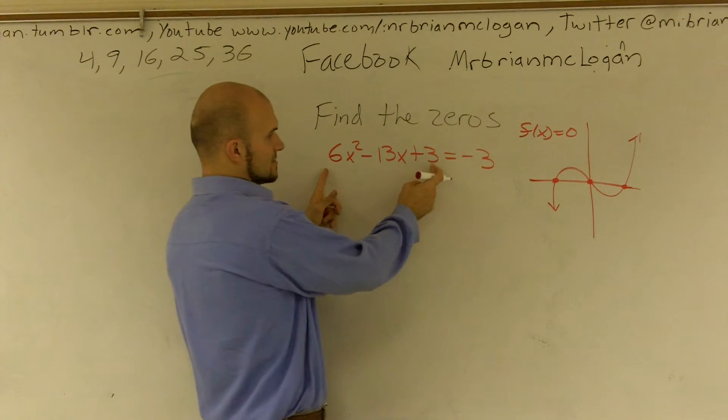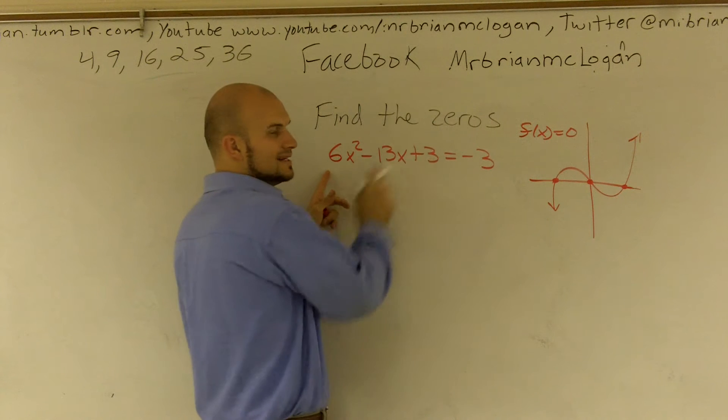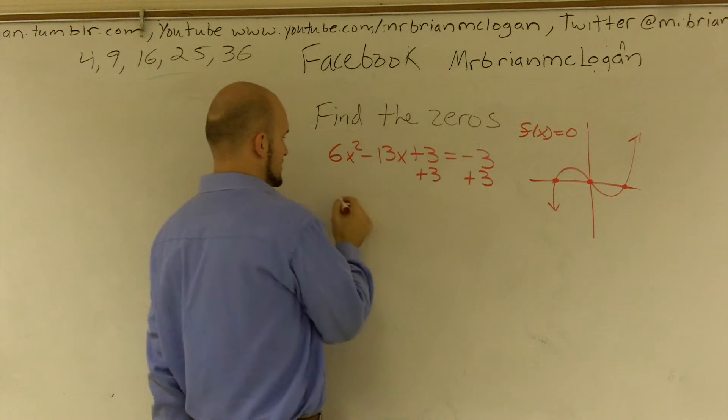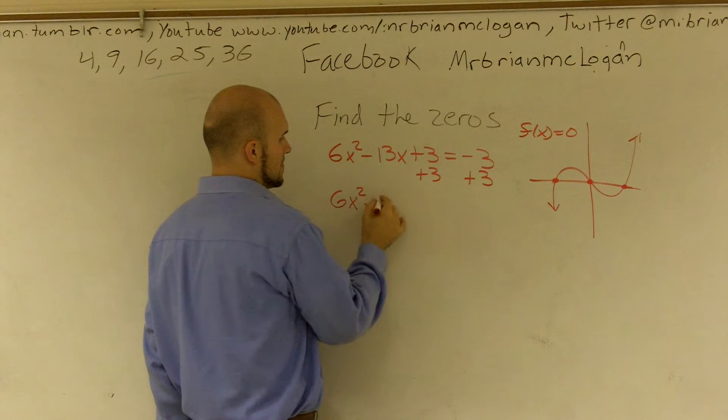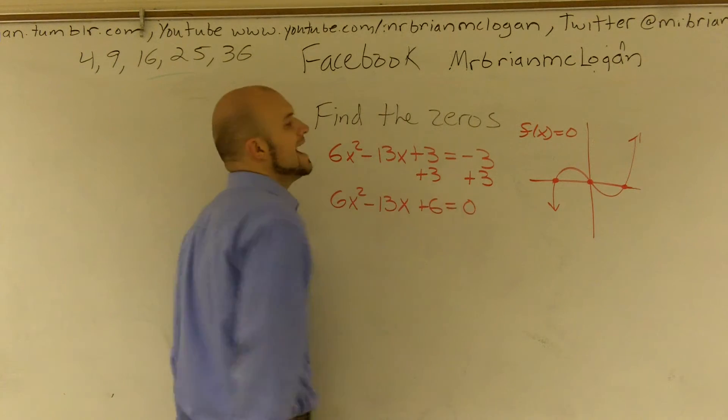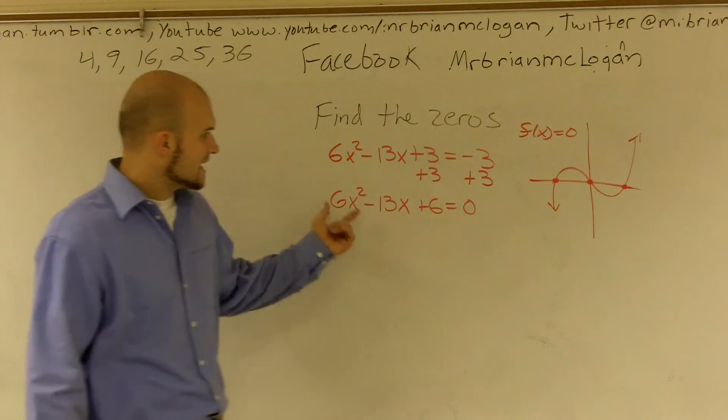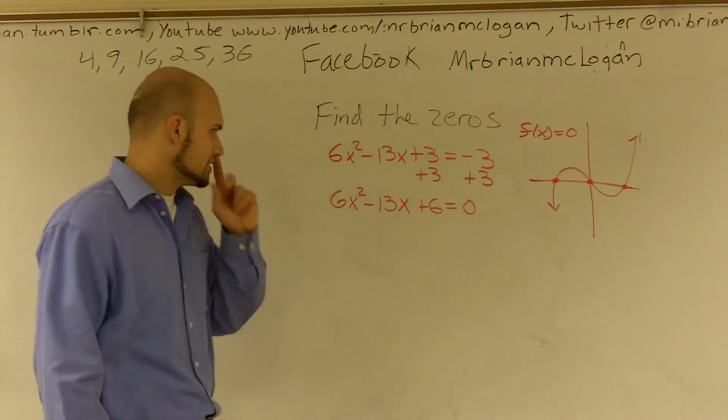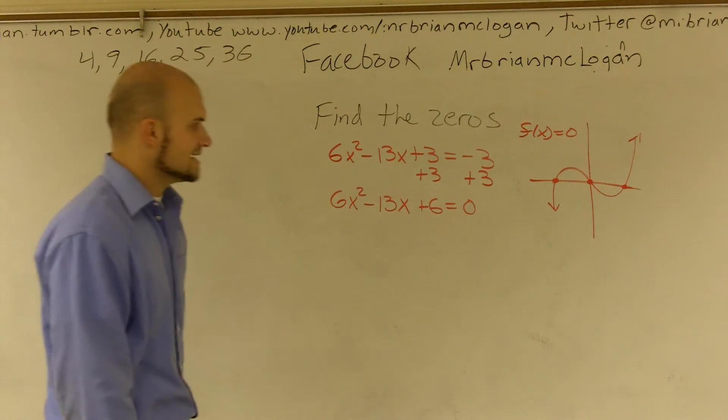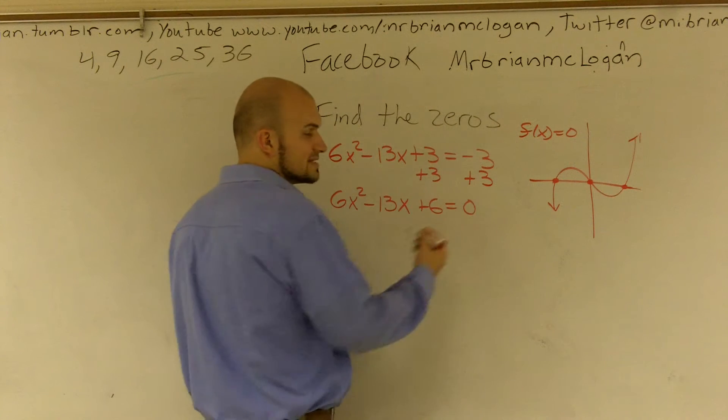Well, right now, I have f(x) equals negative 3. So I need to get that to equal zero. So I'm going to get rid of that 3 right there. So I get 6x squared minus 13x plus 6 equals zero. Now I can find out what values of x are going to make this zero. So the next thing I'm going to do is I need to see if I can factor this.